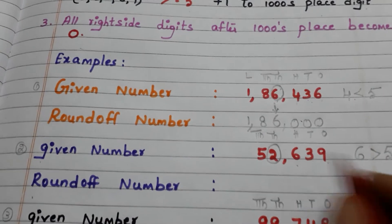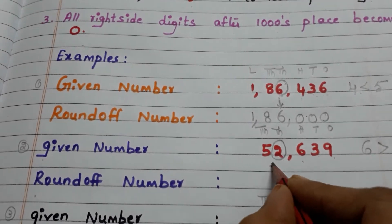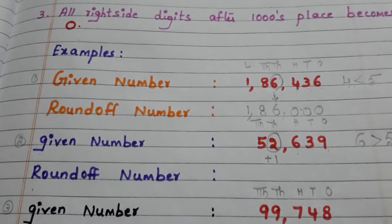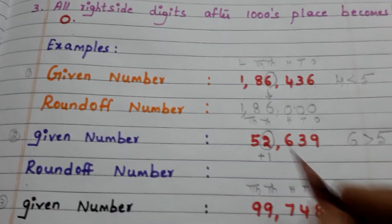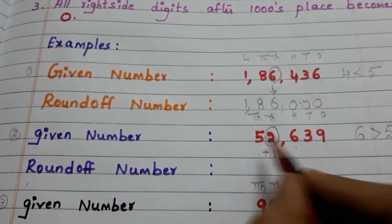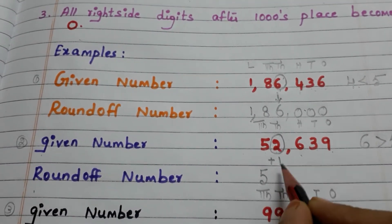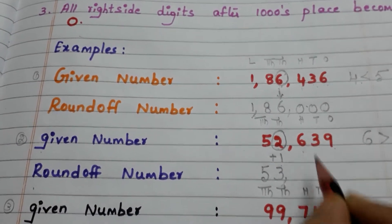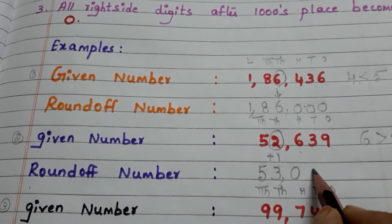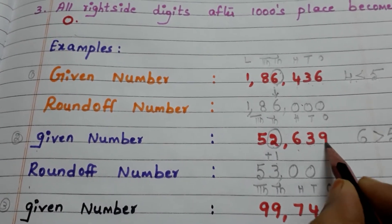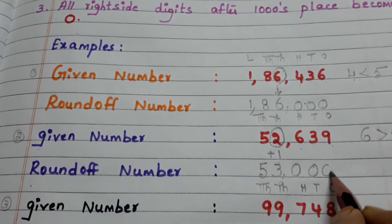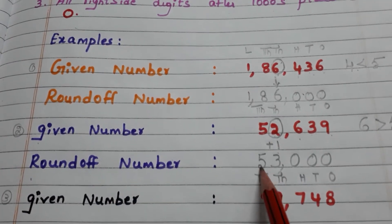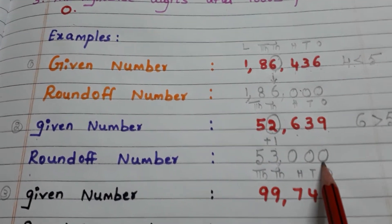Since the hundreds digit is greater than 5, we have to add 1 to the thousands place digit. The new number is: take 5 down, 2 plus 1 is 3, and 6 becomes 0, 3 becomes 0, and 9 becomes 0. So the new rounded number is 53,000.